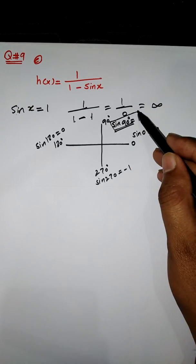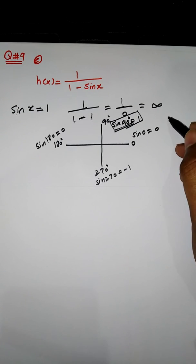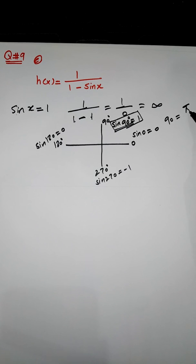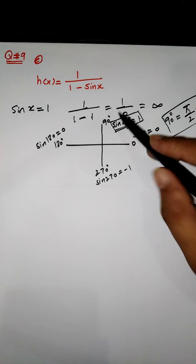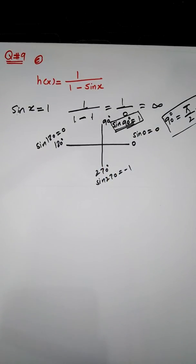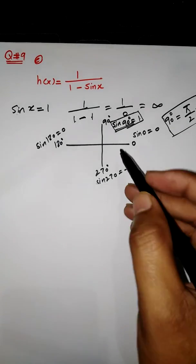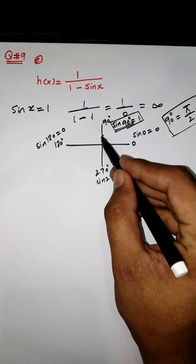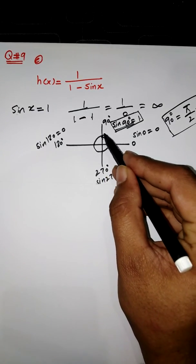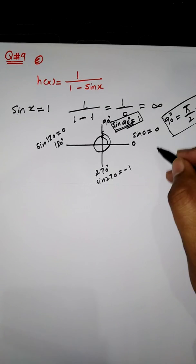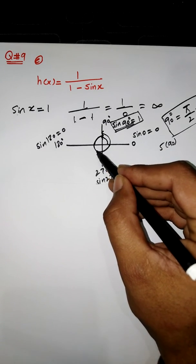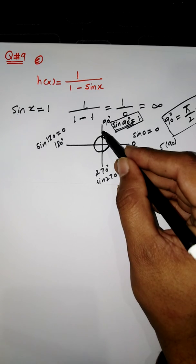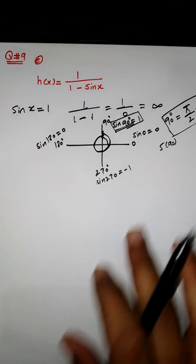We cannot include the angle 90° in our domain. In the circular system, we can write 90° as π/2 radians. So at π/2 our function will be undefined. Whenever we complete one full rotation and return to 90°, that will be 5 times 90°, since here is the 1st 90°, 2nd 90°, 3rd 90°, 4th 90°, and 5th 90°. We make a pattern from this.